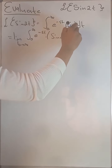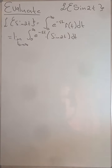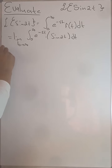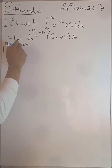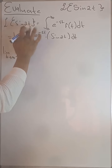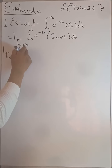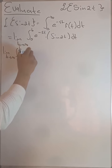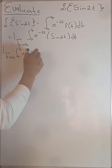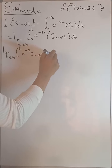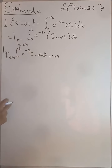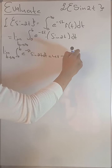This can be written as the limit as b approaches infinity of the integral from 0 to b of e^(-st) times sin(2t) dt. As you can see, we have a product of two functions, so we are going to integrate by parts. The formula is: the limit as b approaches infinity of the integral from 0 to b of e^(-st) sin(2t) dt equals u times v minus the integral of v du.